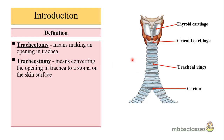Here is a figure showing the anatomy of the trachea. This is the laryngeal framework, composed of the hyoid bone, thyroid cartilage, and the cricoid cartilage. The trachea begins at the lower end of the cricoid cartilage.